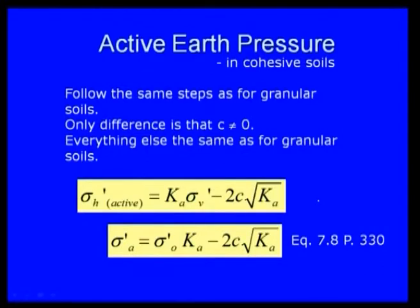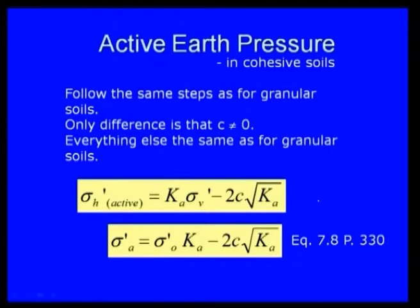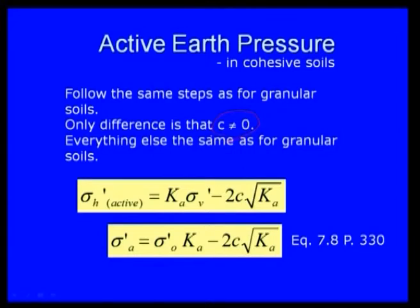For active earth pressure in cohesive soils, the process is the same as for granular soil except C is not equal to zero. In cohesive soil, C equals the unit cohesion. Therefore, sigma H prime active equals KA times sigma V prime minus 2C times the square root of KA. So sigma A prime equals sigma 0 prime times KA minus 2C times root KA.